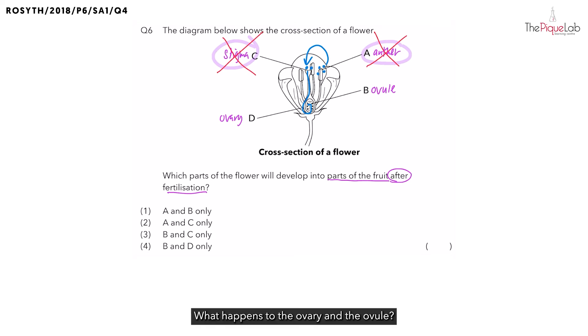What happens to the ovary in the ovule? The ovary develops to become the fruit, while the ovule develops to become the seed.